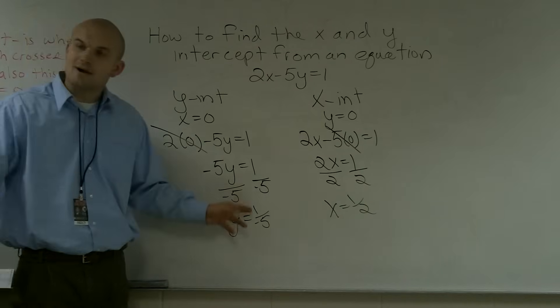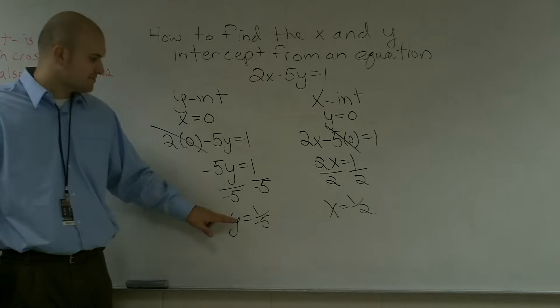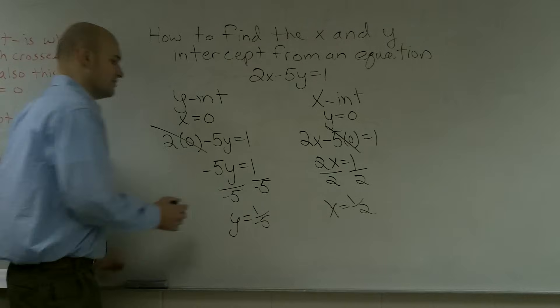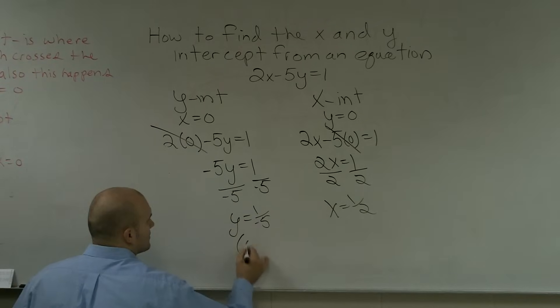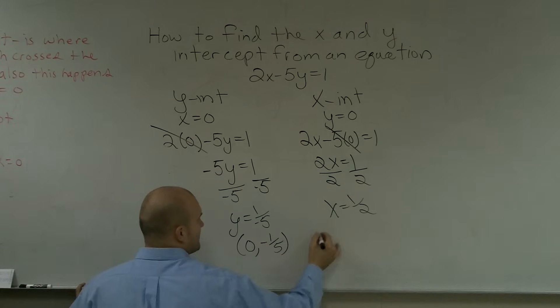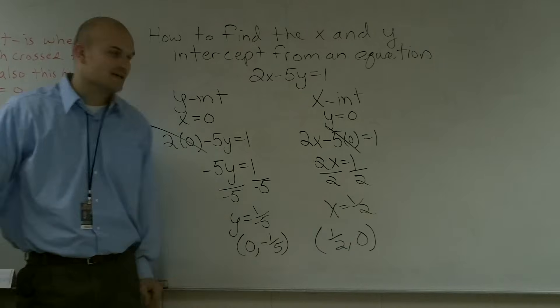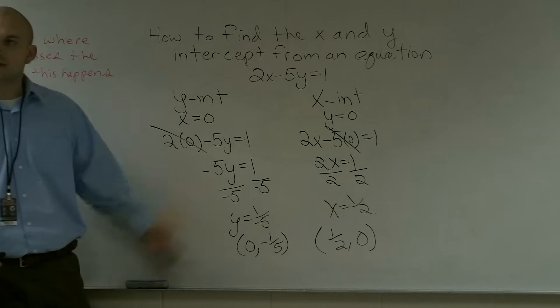So when graphing my two points, if I know that here's my y intercept, I know that x is 0 and my y value is negative 1 fifth, giving the point (0, -1/5). And my x-intercept point is going to be (1/2, 0). So I can go ahead and plot these two points, and they would be the two intercepts on my equation.